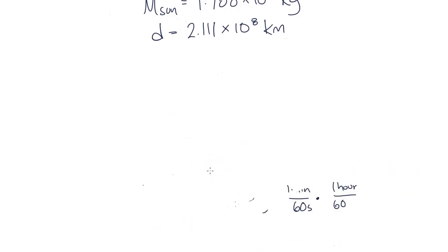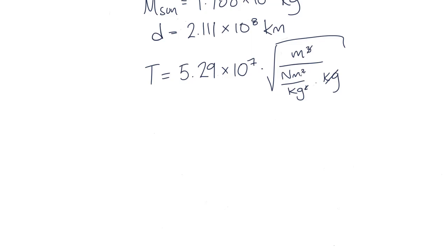And this is equal to 5.29 times 10 to the 7 multiplied by the square root of meters over Newtons, which are kilogram meters per second squared divided by kilograms. If we cancel the kilograms, the meters, and the square of the second, we see that this is 1 over 1 over 1 second, which is equal to seconds, and therefore T is equal to 5.29 times 10 to the 7 seconds.